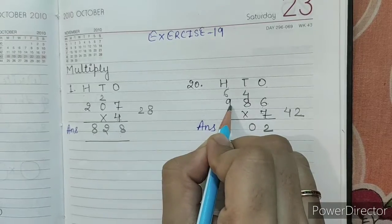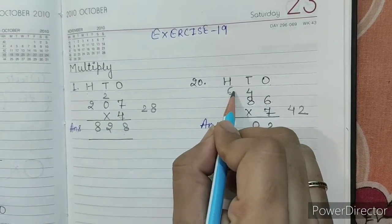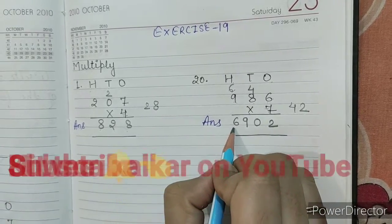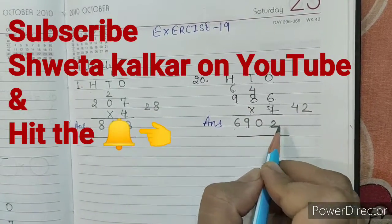7, 9s are 63. 63 plus 6, 69. So, our answer is 6902.